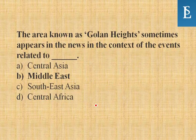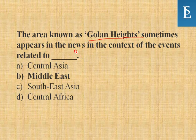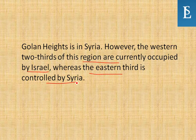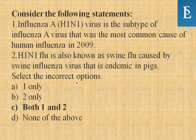The area known as Golden Heights — this is a current affairs question. The Golan Heights sometimes appears in the news in the context of events related to the Middle East. The Middle East is the right context. The western two-thirds of this region are currently occupied by Israel, whereas the eastern third is controlled by Syria.